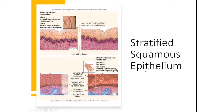Stratified squamous epithelium consists of multiple layers of flattened cells. You want these in locations with a lot of wear and tear or abrasion — such as the mouth and esophagus, where there's a lot of rubbing. Some stratified squamous epithelium is keratinized, containing keratin that forms a barrier preventing water from seeping through — the skin is an example.